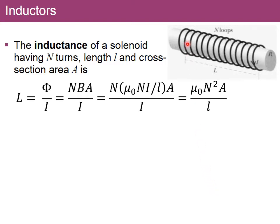If the inductor happens to be a solenoid, as in most cases, the inductance is given by the flux divided by the current. The flux is the number of turns times field times area, and the field of a solenoid is given by mu-zero times N over length times current. The two currents cancel, leaving a purely geometrical expression: L equals mu-zero times N-squared times area divided by length, where area is the cross-sectional area and length is the length of the coil.